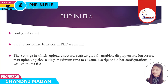The PHP INI file contains the following configurations: first is upload directory, second is register global variable, display error, log errors, maximum uploading size setting, and maximum time to execute a script. All these configurations are written in the PHP INI file.